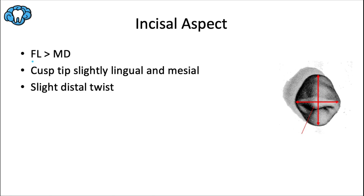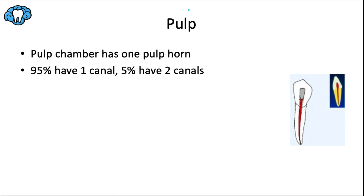All mandibular anterior teeth are wider faciolingually than mesiodistally, as seen from the incisal view. The cingulum is slightly off to the distal surface, just like all anterior teeth, and the cusp tip is off to the lingual and mesial. Similar to the mandibular lateral incisor, the crown is twisted distally on its root base in order to fit into the tighter mandibular arch, which is narrower than the broader maxillary arch.